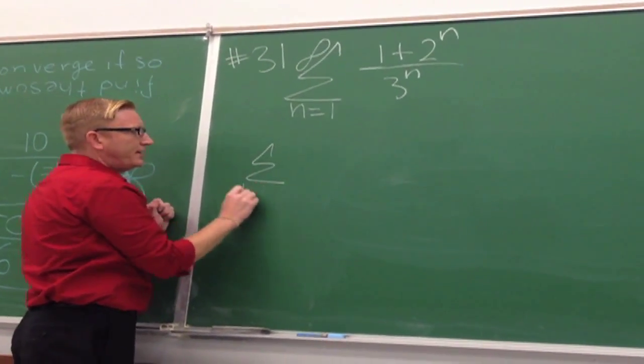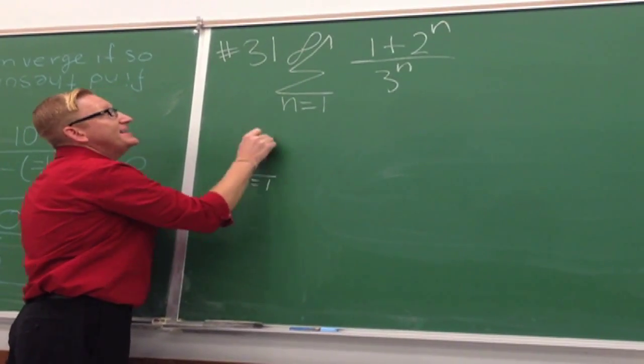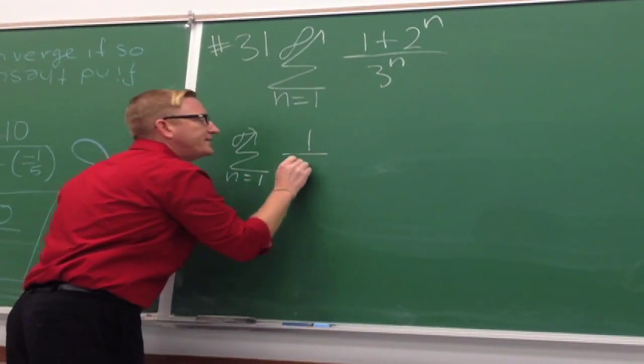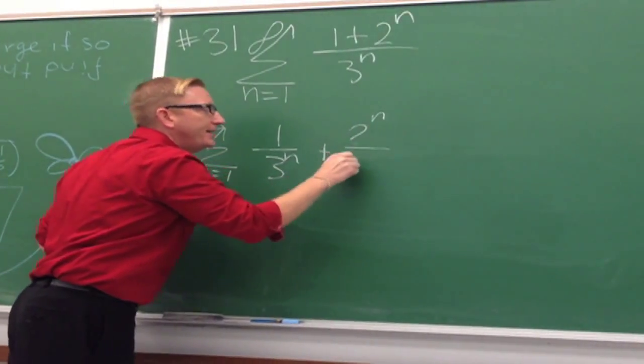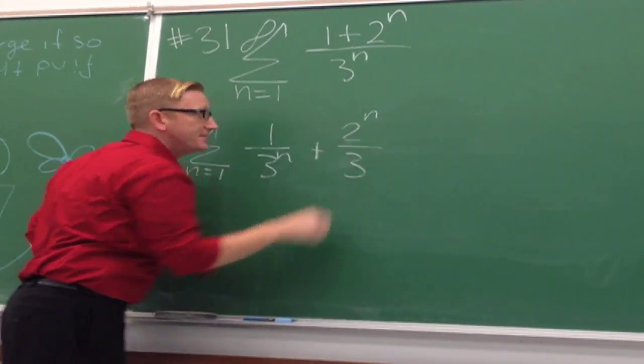This is going to be the sum from n equals one to infinity. And then that's 3^n plus 2^n divided by 3. But wait, there's more.